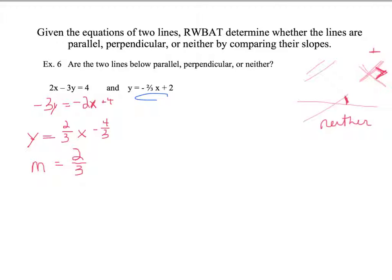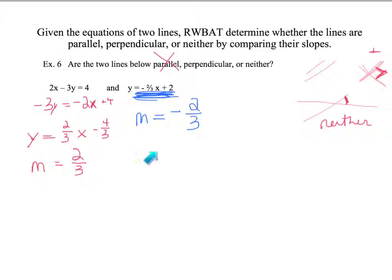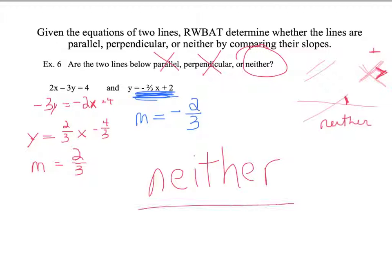Now let's look at our slopes. Are they the same? No — positive 2 thirds and negative 2 thirds are not the same, so the lines are not parallel. Are they opposite reciprocals? They are opposites — one positive, one negative — but they are not reciprocals, because 2 thirds and 2 thirds have the same numerator and denominator rather than being flipped. That means these must be neither — write it in big letters.